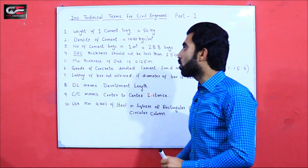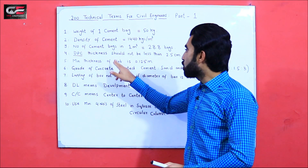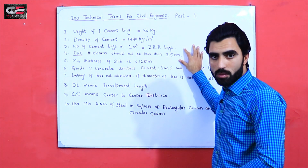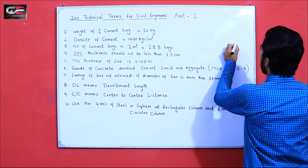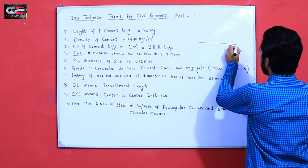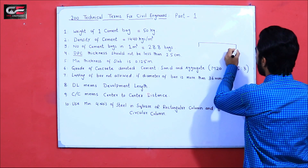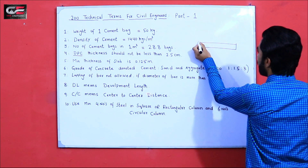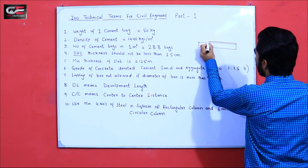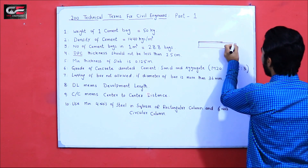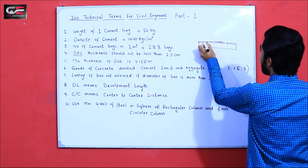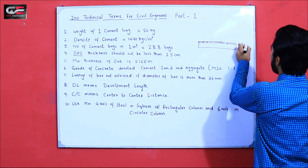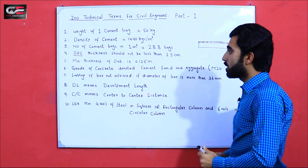The fourth term is DPC — Damp Proof Course. As you can see, this is a foundation. The thickness of DPC should not be less than 2.5 centimeters.